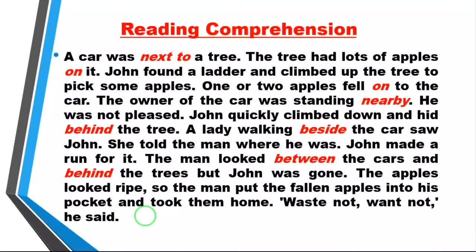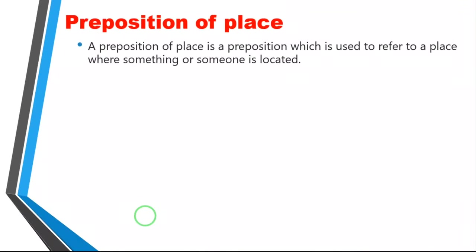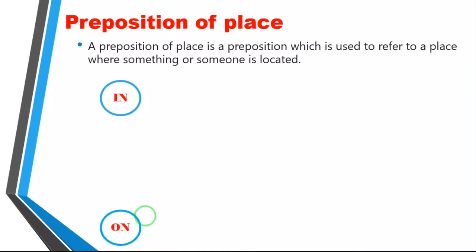What is a preposition of place? Preposition of place is a preposition which is used to refer to a place where something or someone is located. Now there are three prepositions of place we are going to study tonight: in, on, and at.